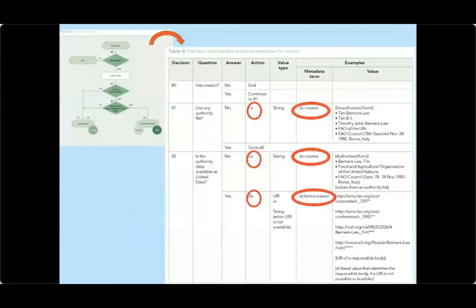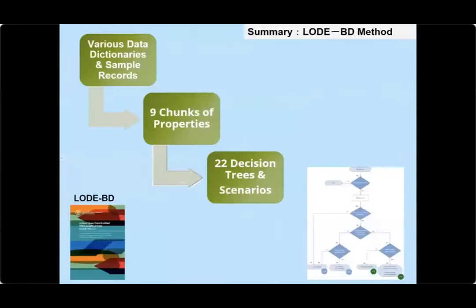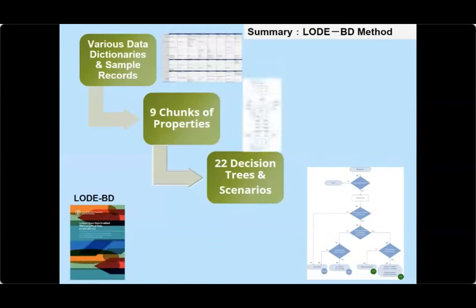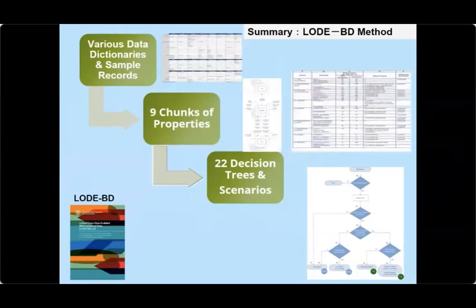The full range of options presented by this guide will enable data providers to make their choices according to their development stages, internal data structures, and the reality of their practices. You can get many examples about how these metadata terms can be filled. From the various data dictionaries and sample records used to build the properties, we decided to use nine clusters of properties, and there are 22 decision trees and scenarios to help you decide how to encode this metadata.